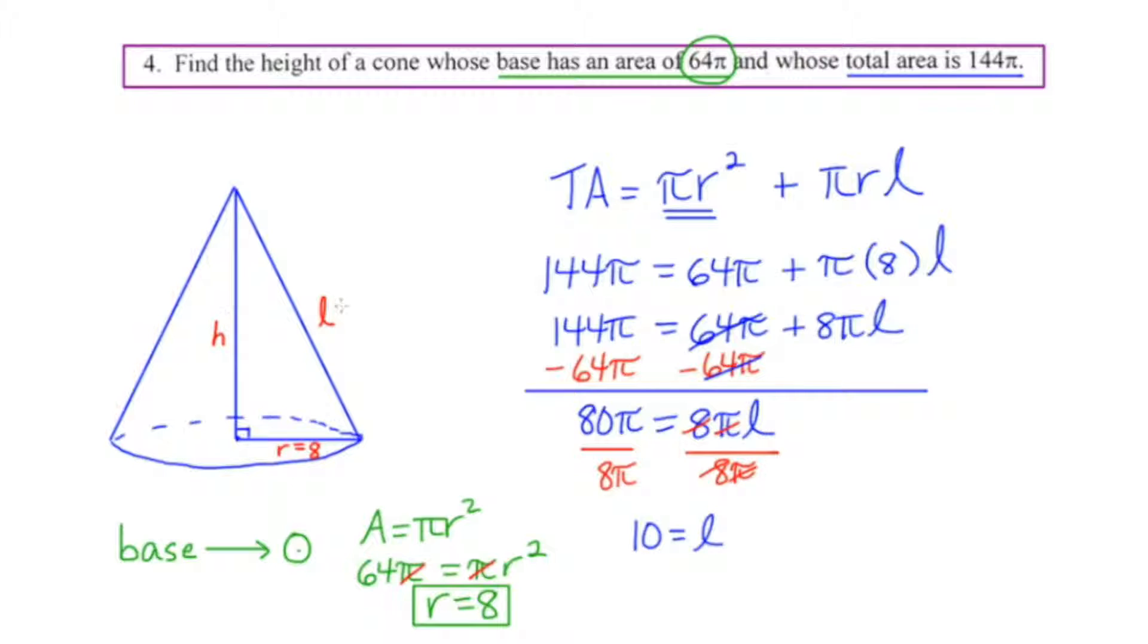So this L is equal to 10. So if we focus on this right triangle in the middle, we've got a blank, 8, 10. Oh my god, that's not a 10 at all, is it? Sorry about that. We've got a 6, 8, 10 right triangle, so the height is 6. That's what they're asking us to find, find the height of the cone. So the height ends up being 6. And that's what they wanted us to find, and we did it. Let's go on to our final example.